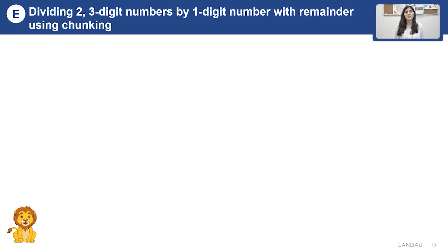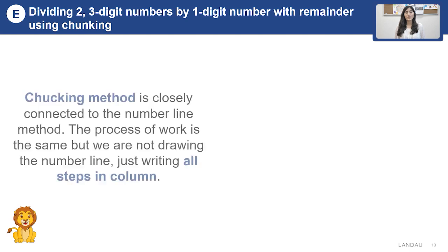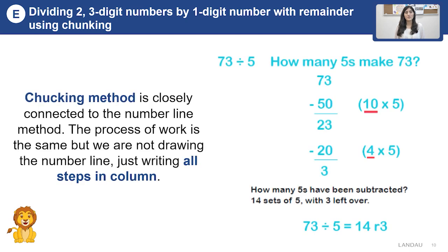Dividing two and three digit numbers by one digit numbers using the chunking method. The chunking method is closely connected to the number line method. The verbal process is the same but the written form is different. Let me show it to you.